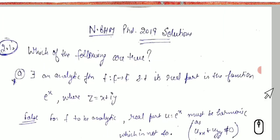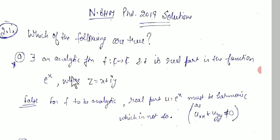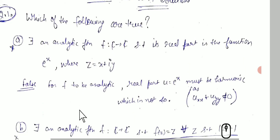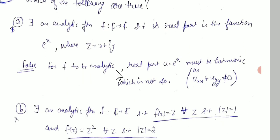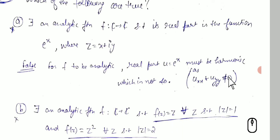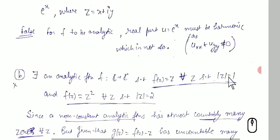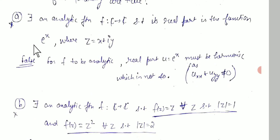The last question asks which statements are true. Statement A: does there exist an analytic function f: ℂ → ℂ whose real part is e^x (where z = x + iy)? For f to be analytic, the real part must be harmonic — i.e., u_xx + u_yy = 0. But here u = e^x gives u_xx = e^x ≠ 0, so the real part is not harmonic. Therefore no such analytic function exists; statement A is false.